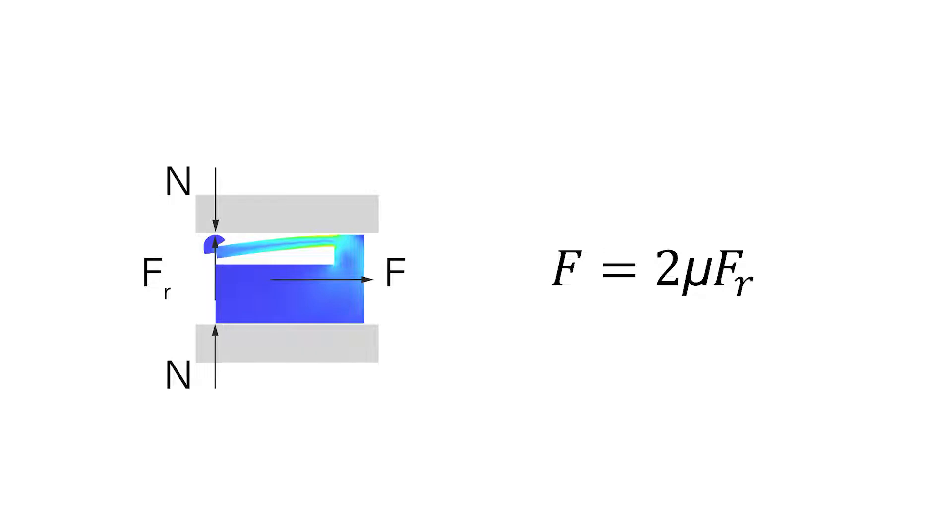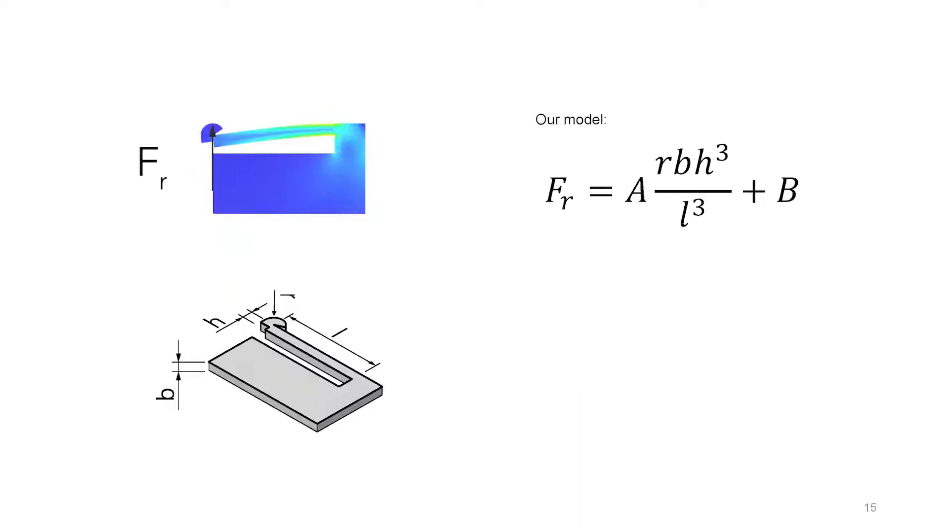Taking a linear resistance module as an example, the resistance force equals 2 times the friction constant times the reaction force. And the reaction force can be calculated with the provided equation, which constitutes a compound explanatory variable containing multiple geometric parameters, coefficient A and constant B.